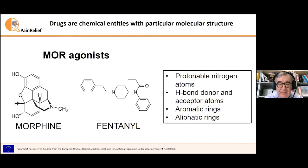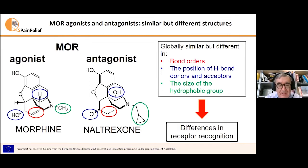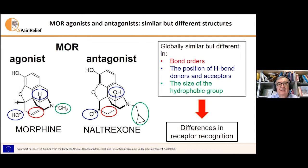We can see from this structure on the slide that morphine and fentanyl are different in structure. Morphine is very compact and fentanyl is elongated, but they have some chemical features in common: the presence of nitrogen atoms that can be protonated, oxygen atoms that can be acceptors or donors of hydrogen bonds, and aromatic and aliphatic rings. However, the number and geometric disposition of these structural features seem very different for these two compounds, and we can imagine that an enormous variety of compounds can be synthesized just by playing with these chemical elements. We can also compare the structure of morphine with that of a typical antagonist, naltrexone. They are globally similar, but there are some differences in the bond orders (red), the position of hydrogen bond donors and acceptors (blue), and the size of the hydrophobic group (green), that should lead to differences in receptor recognition.